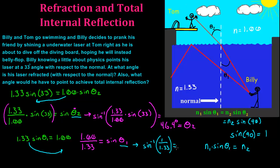And you get 48.8 degrees with respect to the normal. So if he were to point this at 48.8 degrees with respect to the normal, he would have a beam that would not go out of the water. And instead, we would have total internal reflection.